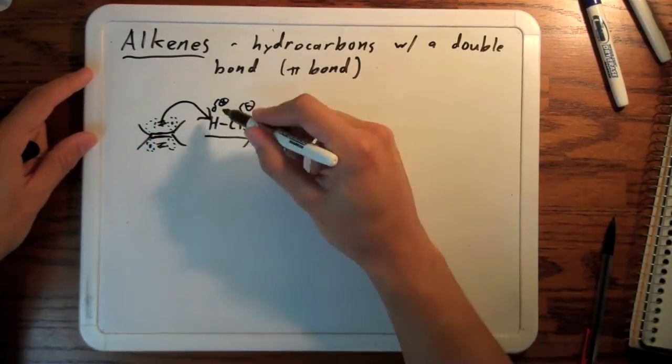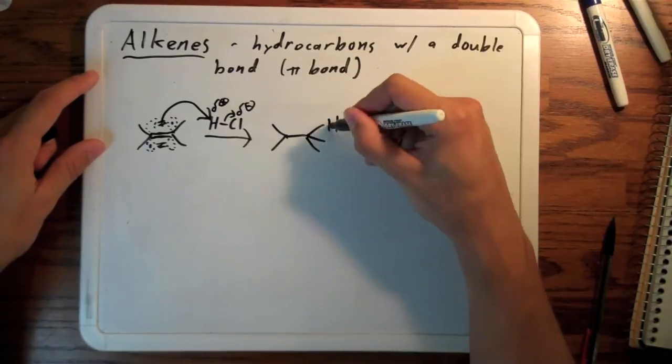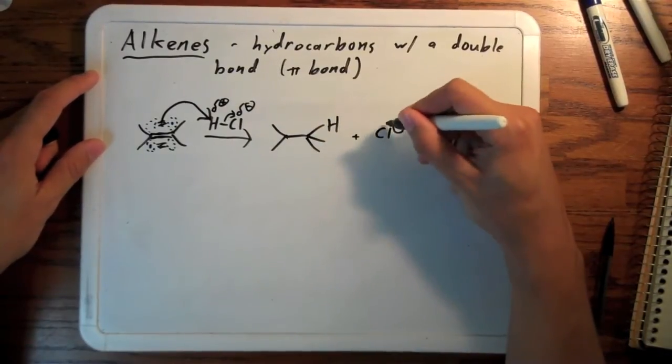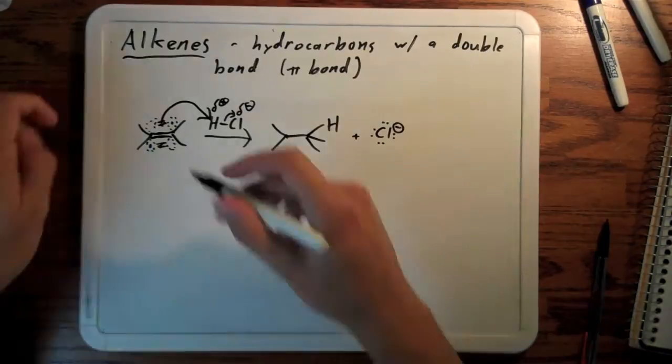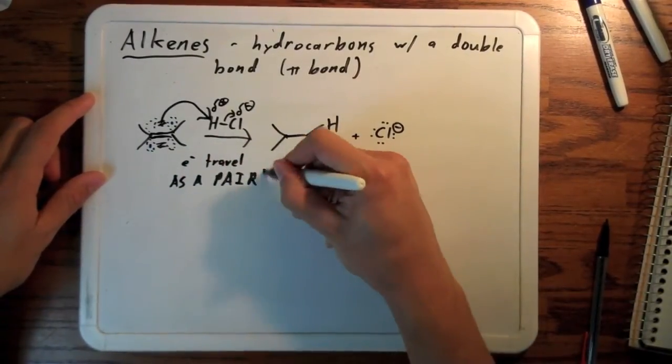What happens is that these two bond electrons, yes, both of them, from the alkene, come and bond with the hydrogen. That in turn gives both of its shared bond electrons with chlorine all the way to chlorine, forming chloride ion and this carbocation.